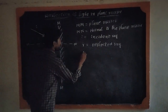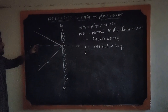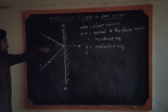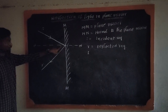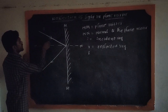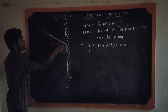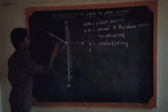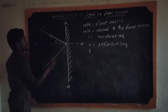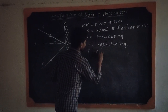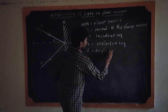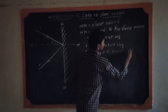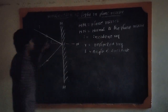And next, the angle of incidence — what is the angle of incidence? The normal is always perpendicular to the plane mirror. The ray that moves towards the mirror is called the incident ray. The angle between the normal and the incident ray is called the angle of incidence.